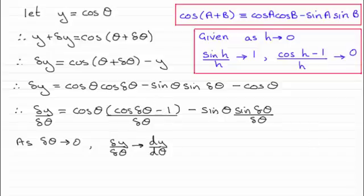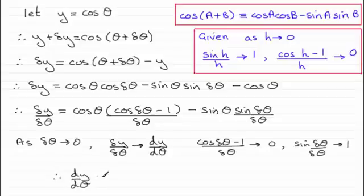So putting those results down, we can see then that dy by d theta is going to equal, well for this part it's going to be cosine theta multiplied by 0, that's going to be 0. And then here we just end up with minus sine theta multiplied by 1. So it's going to give minus sine theta.